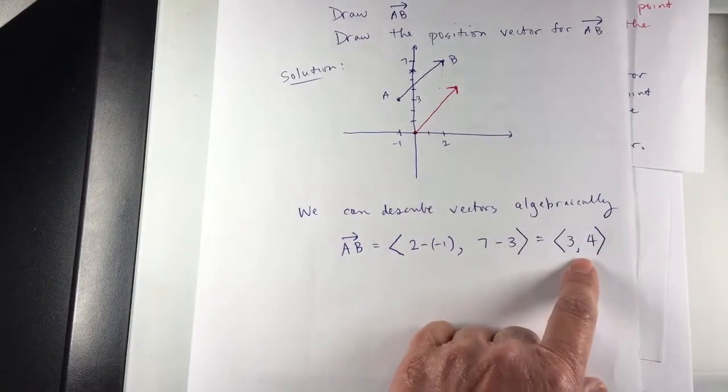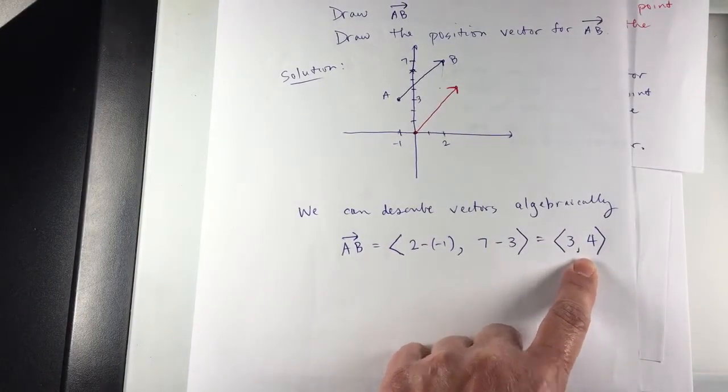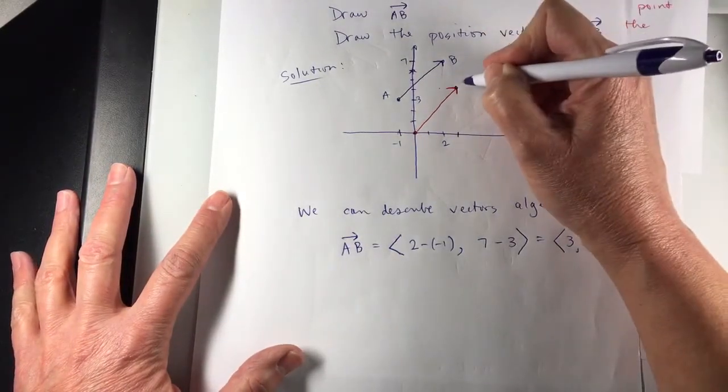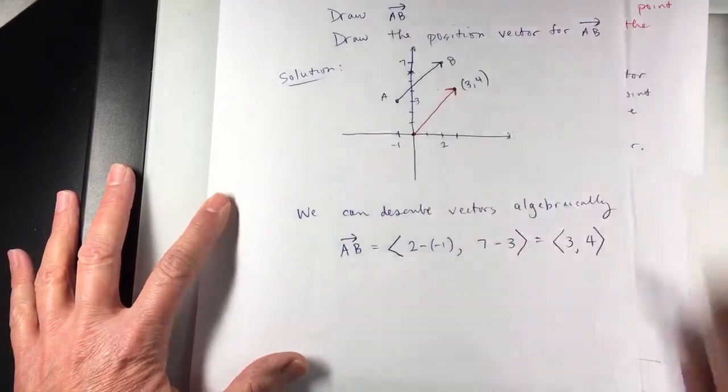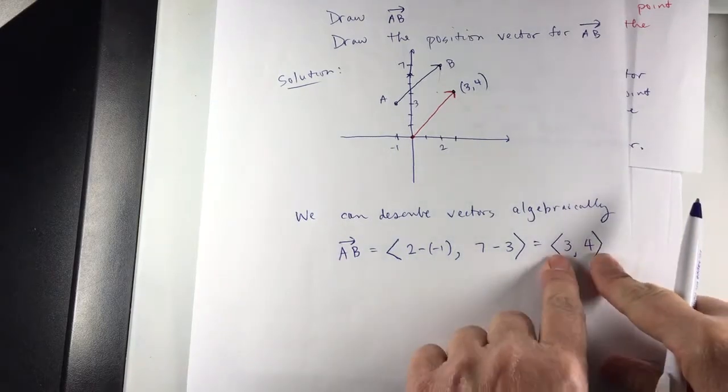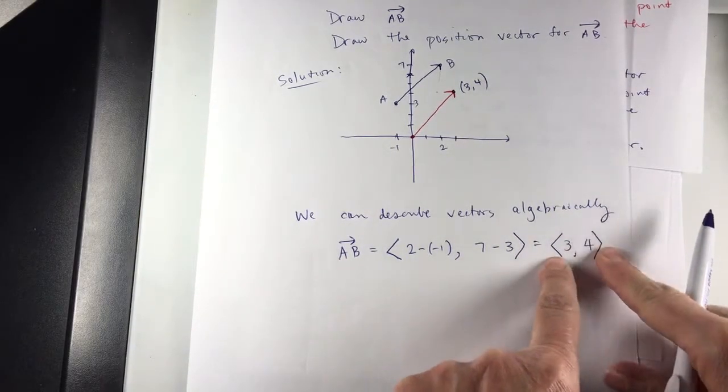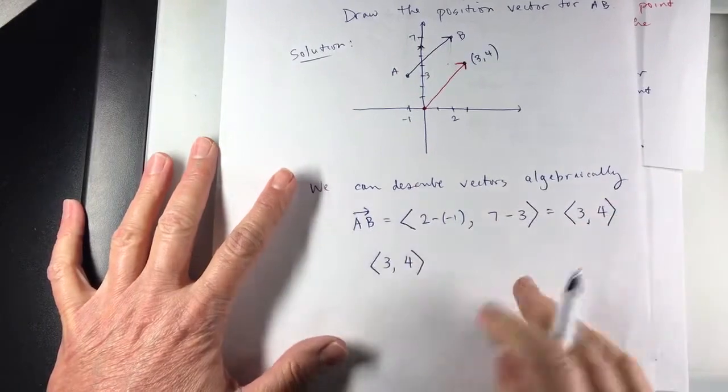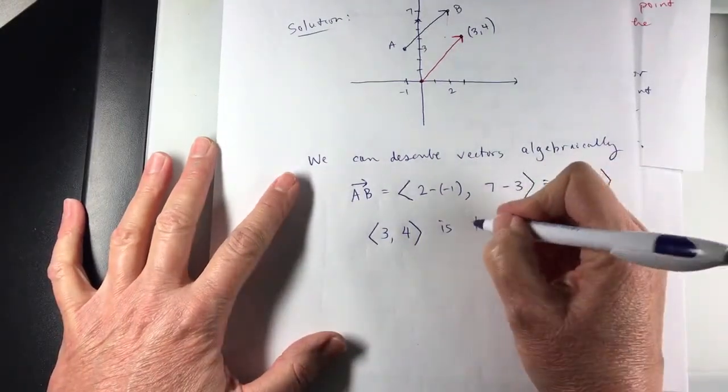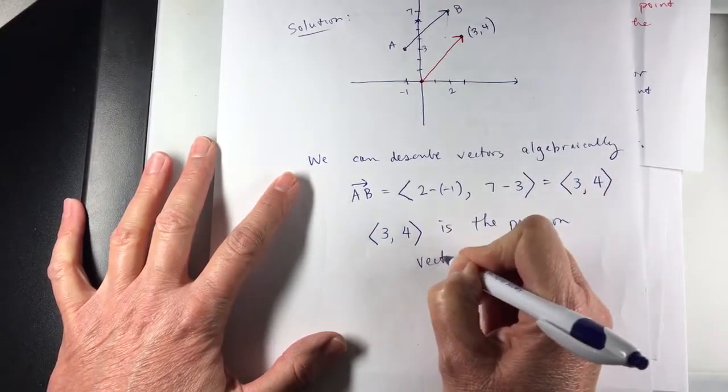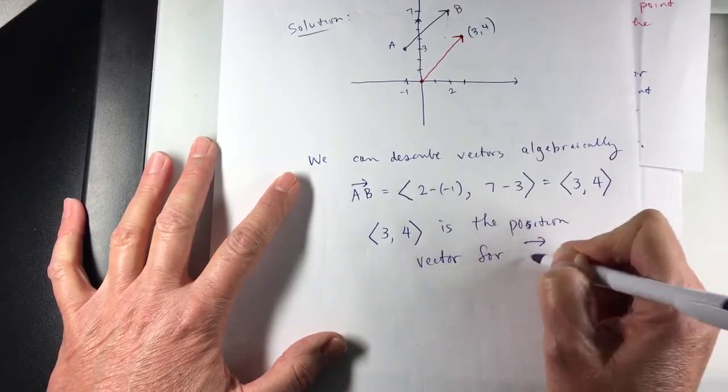Now that's an angle bracket. Angle bracket is to indicate a vector. Because look at what this is. Three comma four. This is the point three, four. So if it's a point, I'll put it in parentheses. But if it's a vector, the vector, that directed line segment, I'll put it in angle brackets. This, in angle brackets, this is the position vector. Three, four, in angle brackets, is the position vector for vector AB.